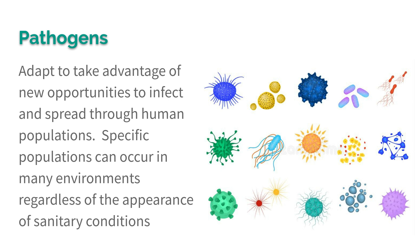Pathogens are just things that cause illness — whether it's a bacteria, a virus, a parasite, or a prion. It's something that can transmit an illness from one organism to another.